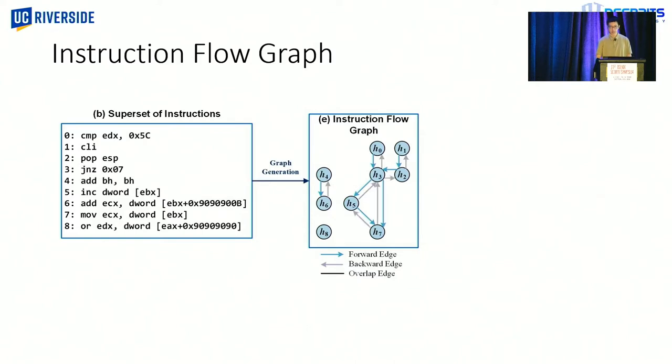And we also have backward edge, which is essentially the same as the forward edge, except the source and target nodes are swapped. And finally, we have overlap edge indicating the two instructions overlap with each other. And that's how we construct the graph.